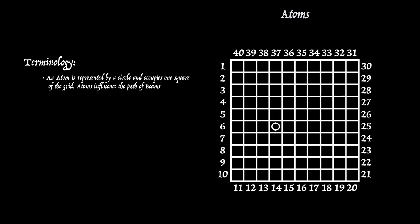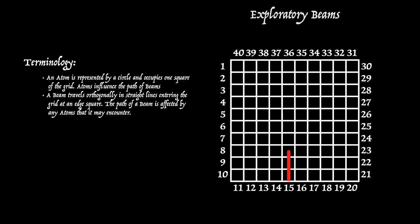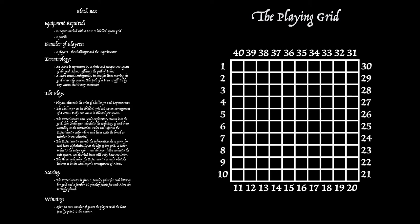So let's look at some of these terms we've been using. An atom is represented on the grid by a circle. There's four atoms that make up a molecule for each game. Now the exploratory beams travel in straight lines up and down. Here's one entering at 15 and leaving at 36, or horizontally, there's one entering at 8, leaving at 23. And how they interact with atoms, we'll leave that until we discuss the interaction rules.